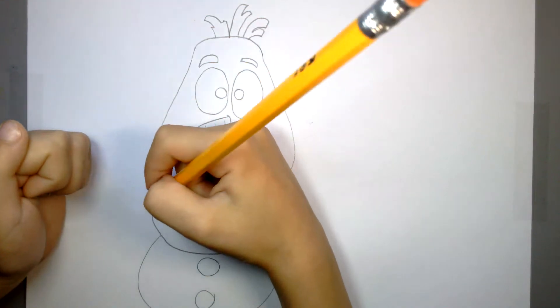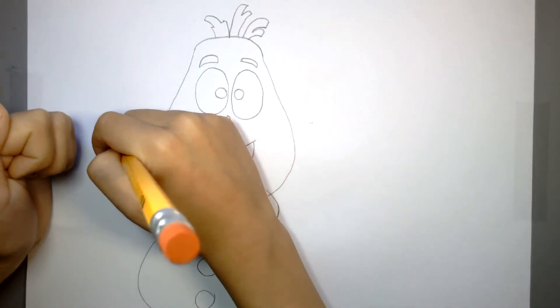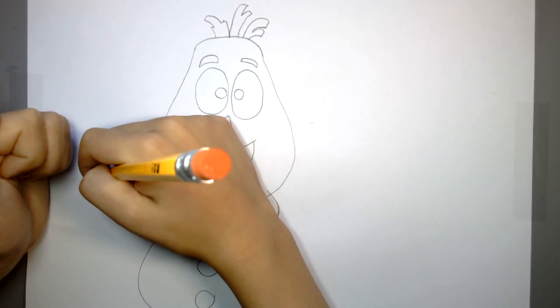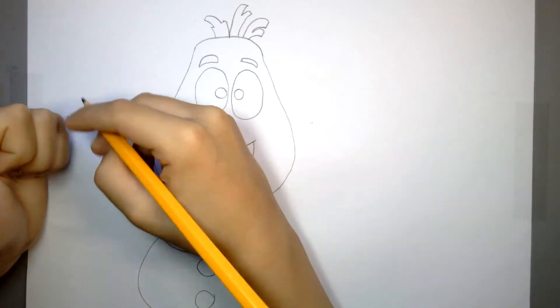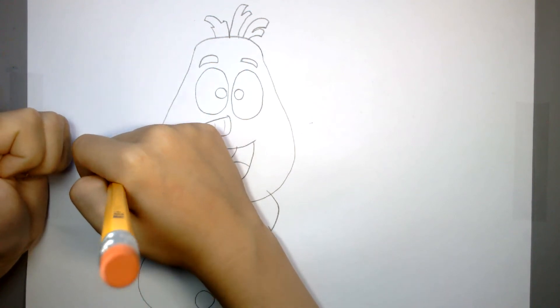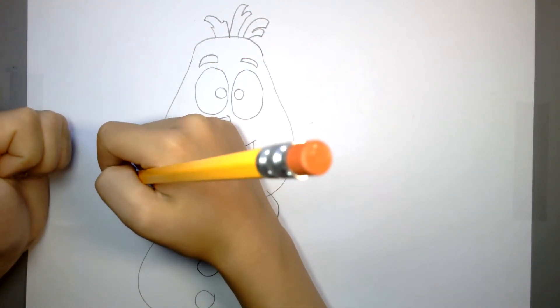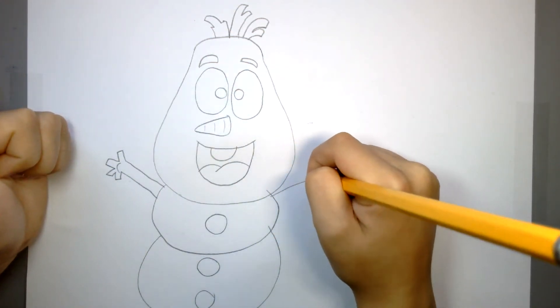Now we're going to do his arms. We're going to do the other one. I forgot. He has four fingers. Right? Yeah, I think so. Then we're going to do the other one.